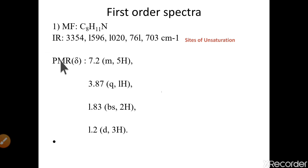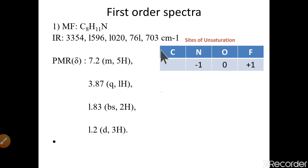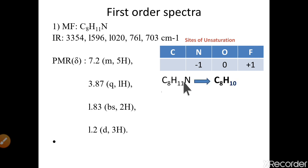Here are the IR data and the PMR data. The first thing we need to do for solving any spectroscopic problem is to calculate the degrees of unsaturation. I have a trick: in the periodic table, if you have oxygen, just ignore it. If you have nitrogen, remove one hydrogen from the molecular formula. If you have halogens, add one hydrogen. Our formula is C8H11N, so we remove one hydrogen, giving us C8H10.